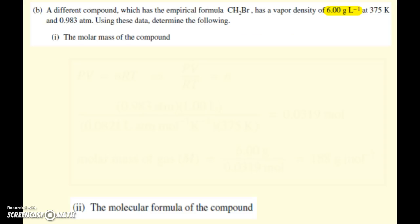Alright, next up, the second part to this question. A different compound, which has, sorry, PA announcement. So we've got a CH2Br compound. That's the empirical formula. It's got a vapor density of 6 grams per liter at 375 Kelvin and 0.983 atmosphere. So how are we going to find the molar mass of the compound? Alright, the density thing looks goofy, 6 grams per liter, but that's going to be important.